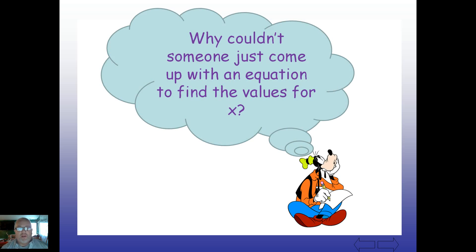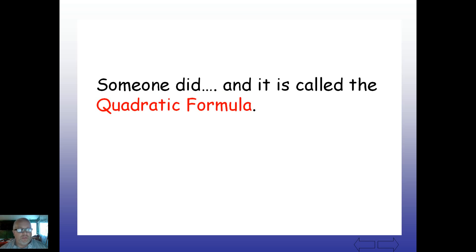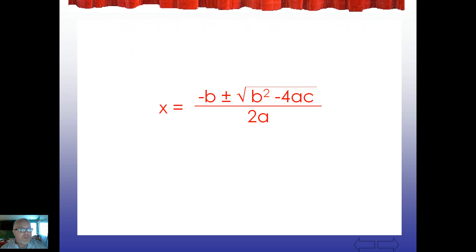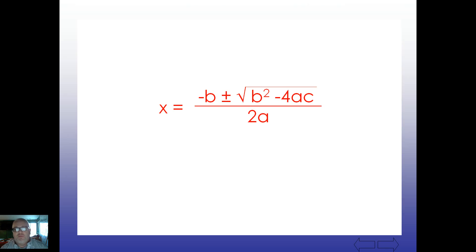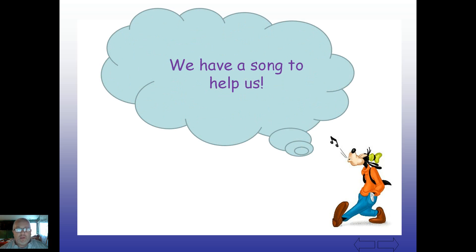We learned how someone could come up with something to simply find the values of x — and we call that the quadratic formula. To unveil it one more time: x equals negative b plus or minus the square root of b squared minus 4ac, all of that over 2a. We also have a song to help us remember that, which we saw earlier and will be practicing in class.